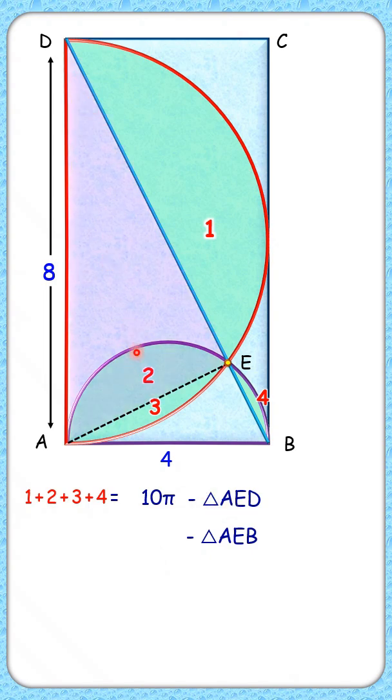Together it will form triangle ABD, and ABD area is half the area of the rectangle, that's 16 centimeters squared. Simplifying it, we'll get the green shaded region as 15.4 centimeters squared.